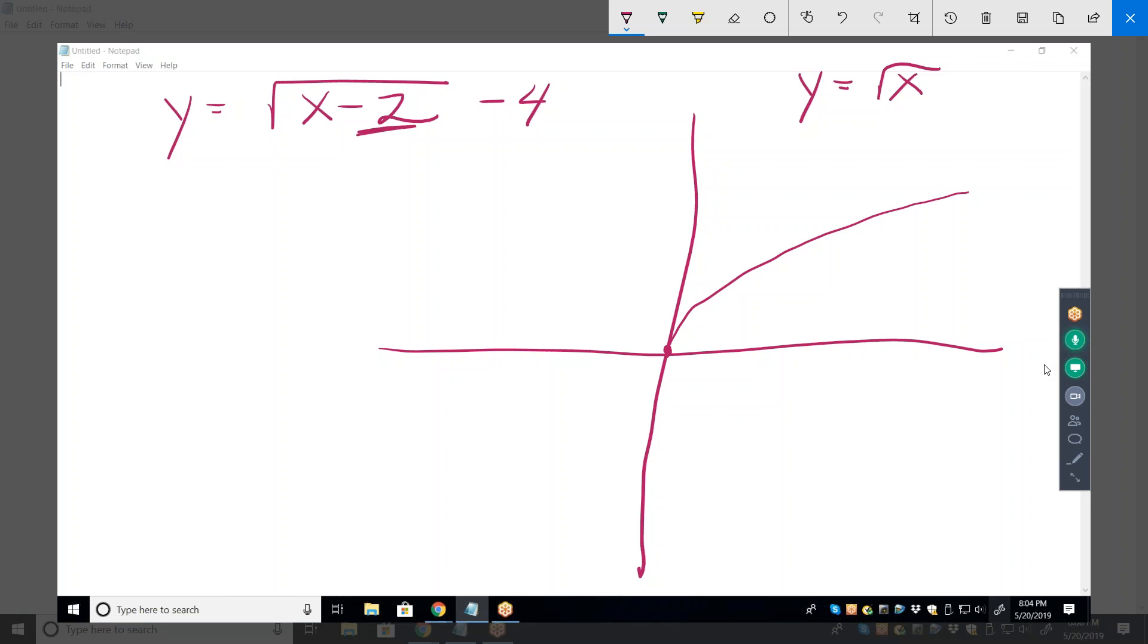Now we have to figure out the transformation. Start with this one right here. First of all, is that vertical or horizontal? That's a vertical. No. Inside the function is horizontal. Outside the function is always vertical. Okay. This is inside the radical sign. So it's inside the function.